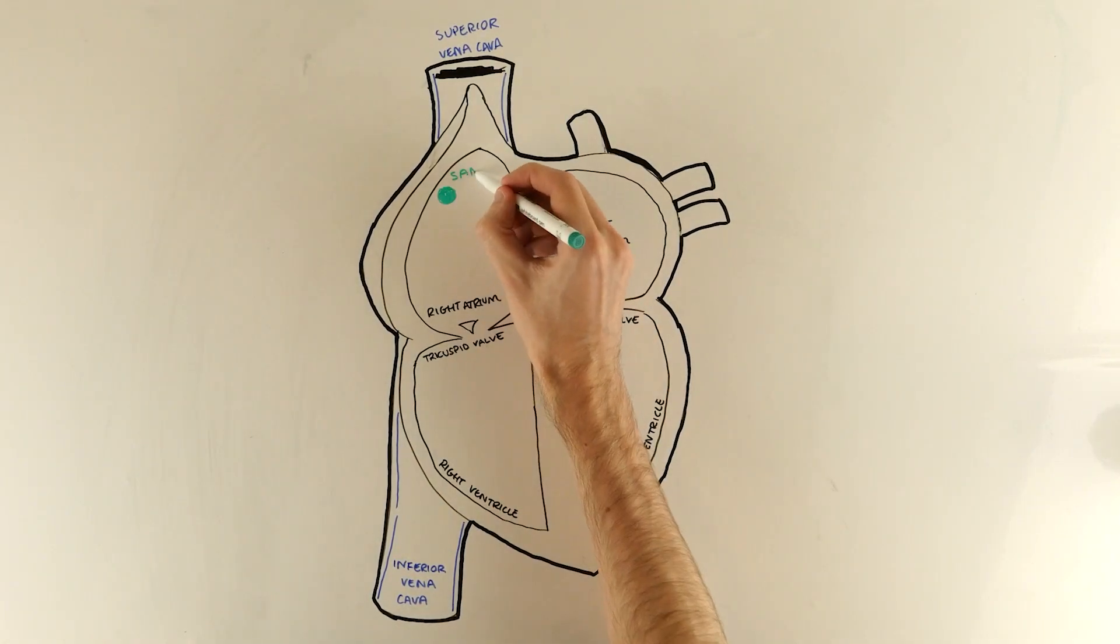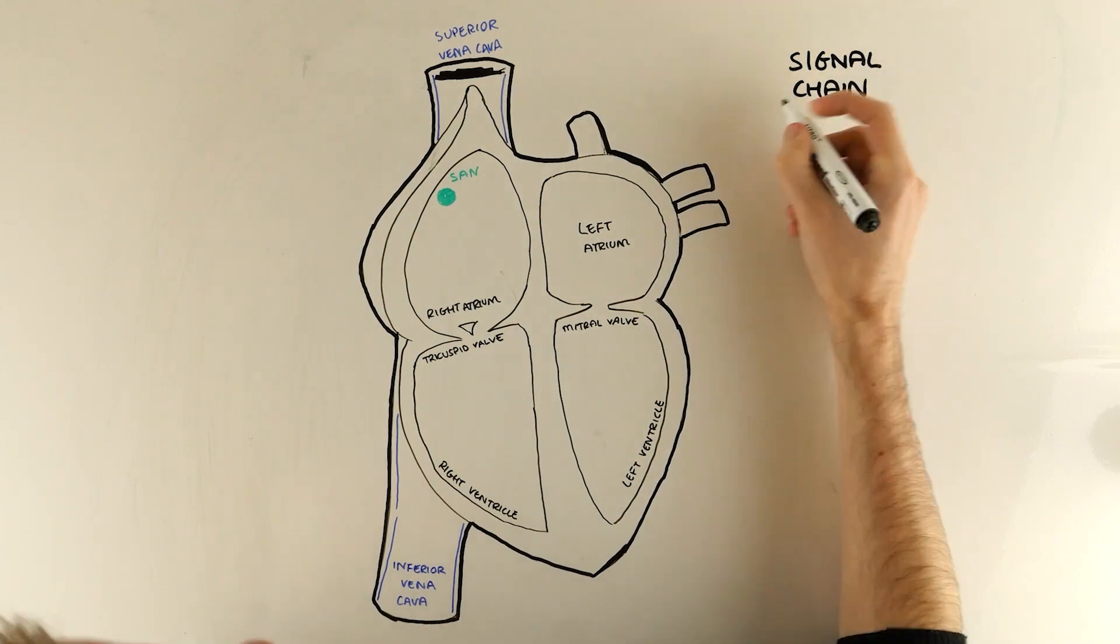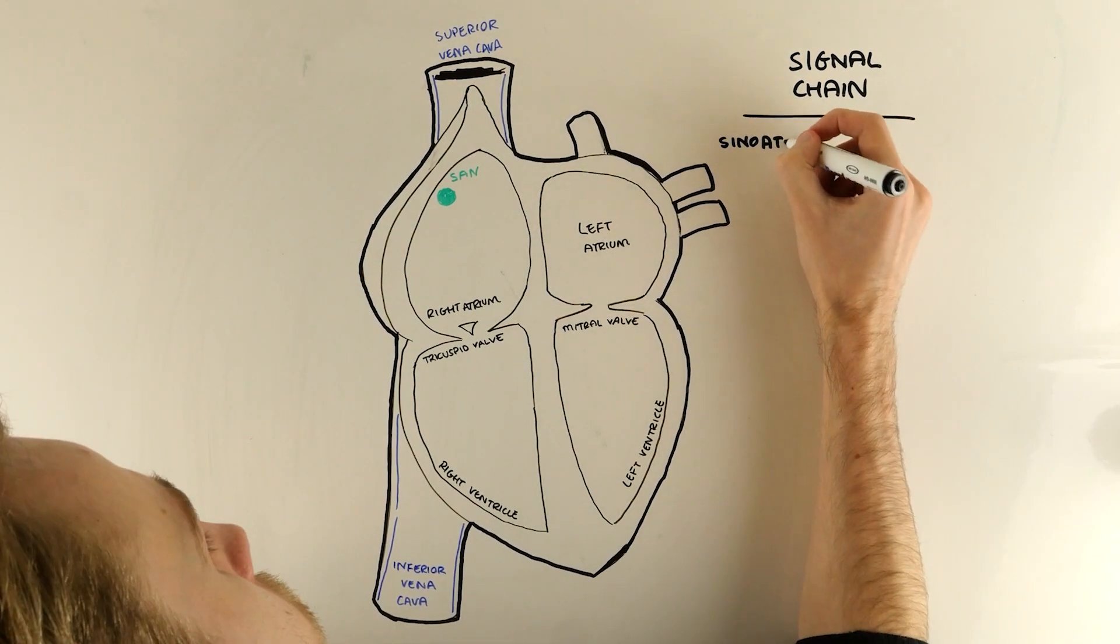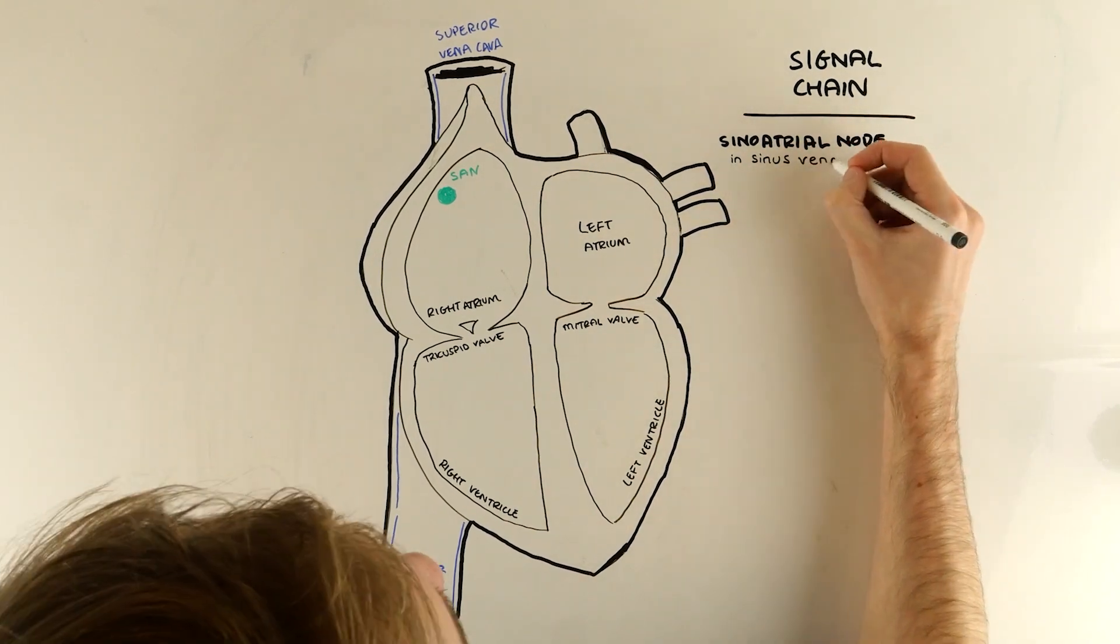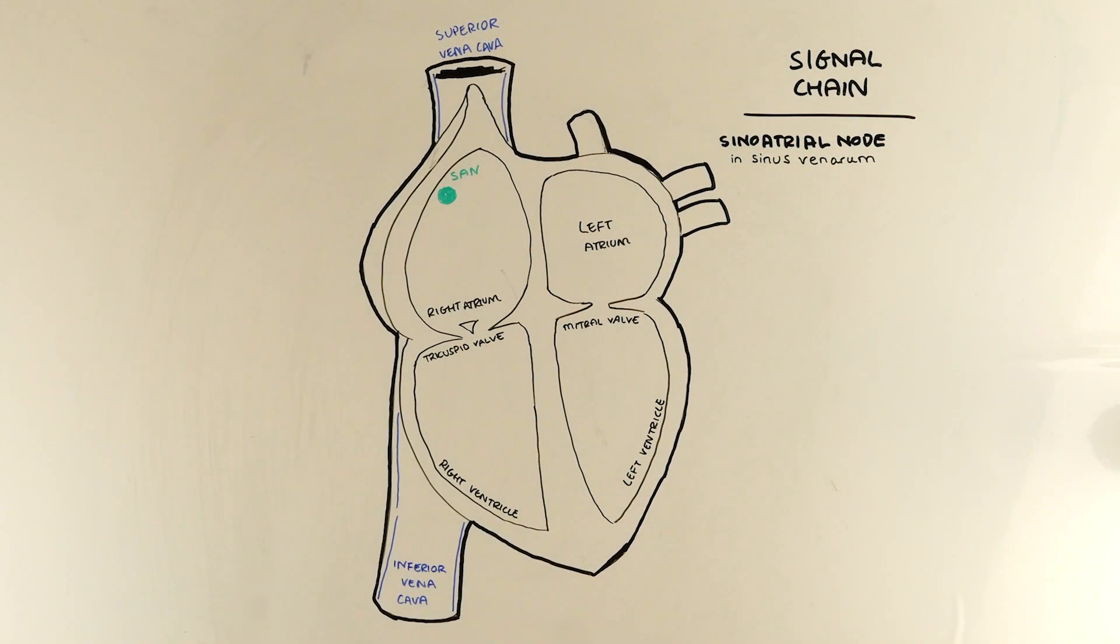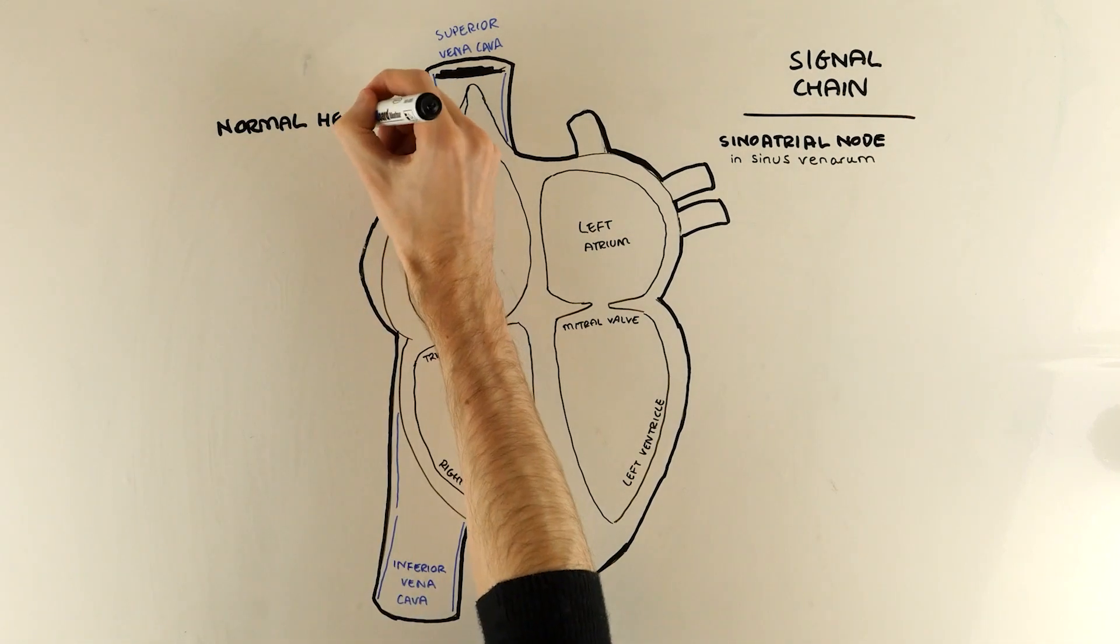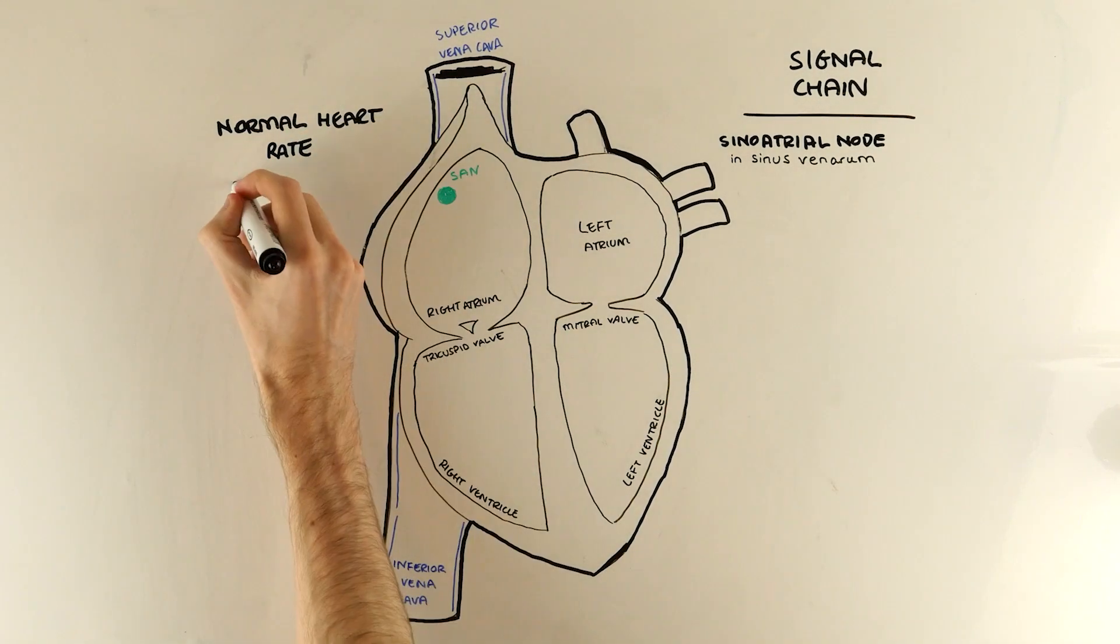As you'll remember everything begins with the sinoatrial node, a cluster of special cells sat in the upper wall of the right atrium in a site called the sinus vanarum. This node is special because it can spontaneously depolarise and produce electrical activity and the speed at which it does that controls our heart rate, which is around 60 to 100 beats per minute in an average person.